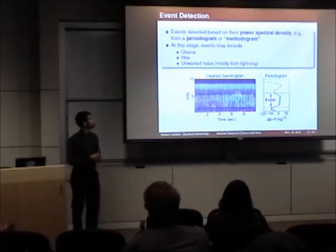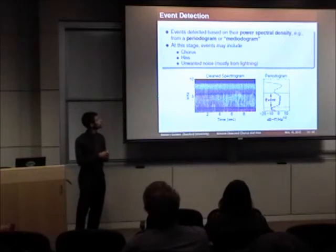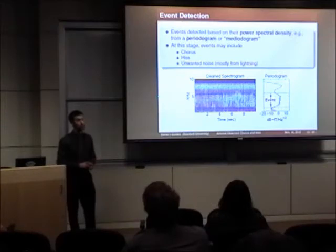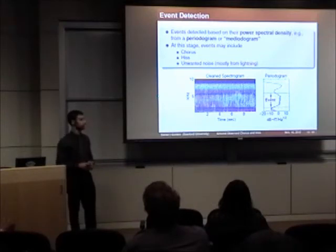Another form of detection can be accomplished by a mediotogram, which is a similar device, where instead of taking the average over time of the spectrogram, we take the median, which has the effect of removing any unwanted impulsive noise.